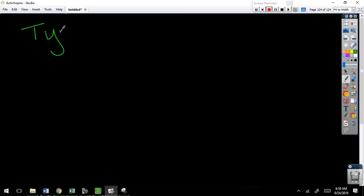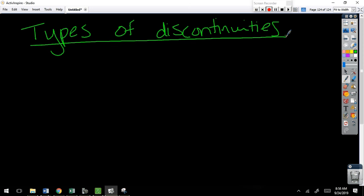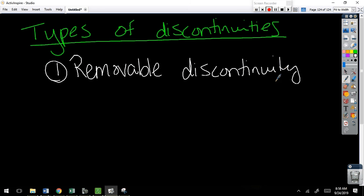The first one is what we call types of discontinuities, which is another big word for things that are not really hard to understand. The first one is what we call a removable discontinuity.